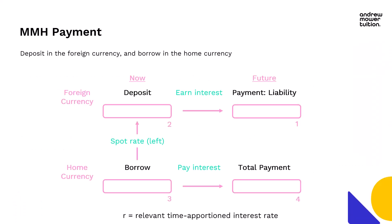For money market hedges I love these templates — big fan of these boxes. This is for a payment. If you've got a payment, what you're going to need to do is deposit in the foreign currency and borrow in the home currency. In box one at the top right, that's the payment we need to make at some point in the future. So we deposit some money in the foreign currency in a bank account, ready to pay off that liability. Imagine we need to pay a million euros in six months' time — we put some euros into a European bank account ready to pay off that liability.